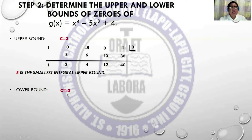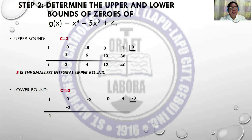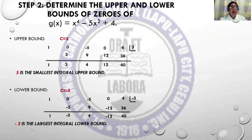For the lower bound, c = -3. Identifying the coefficients again: 1, 0, -5, 0, 4, with c = -3. Using synthetic division: bring down 1. 1 times -3 is -3. Combine: -3. Times -3 is positive 9. Combine: positive 4. 4 times -3 is -12. Combine 0 and -12 is -12. -12 times -3 is positive 36. Combine 4 and 36 is 40. The result gives alternating signs. Therefore, -3 is the largest integral lower bound.